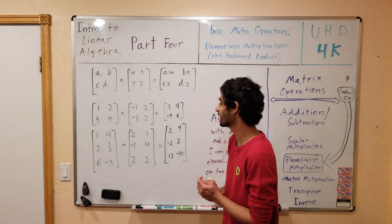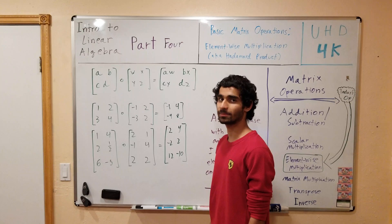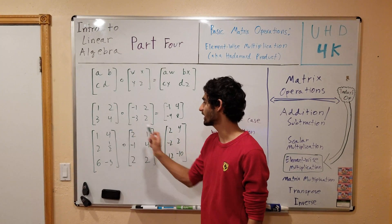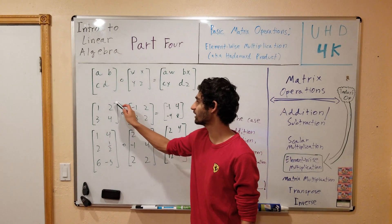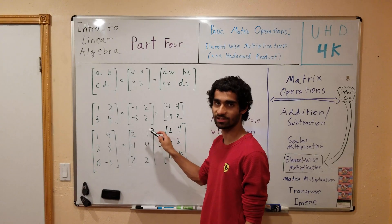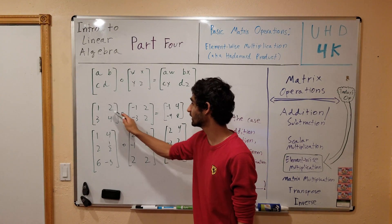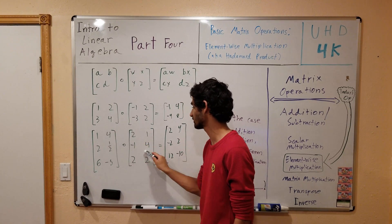You probably realize this by now, but as is the case with adding and subtracting matrices, we can only take the Hadamard product if the dimensions of the matrices are equal. We cannot take the Hadamard product of this matrix and this matrix because, as you can see, this matrix has three rows and this matrix only has two, and this matrix doesn't have a corresponding third row which can correspond to this row.